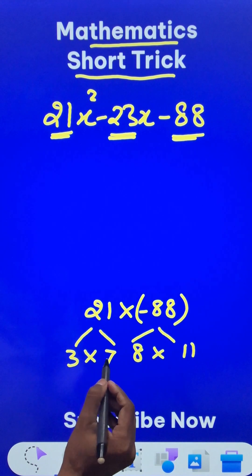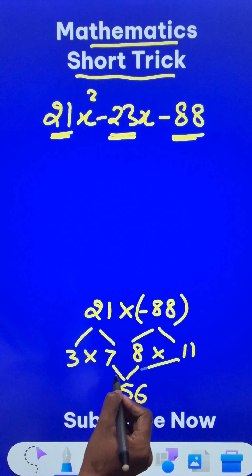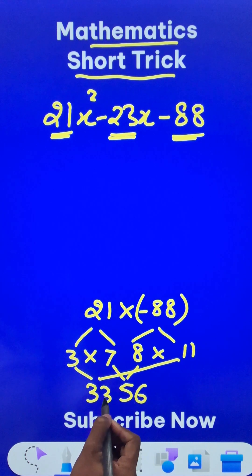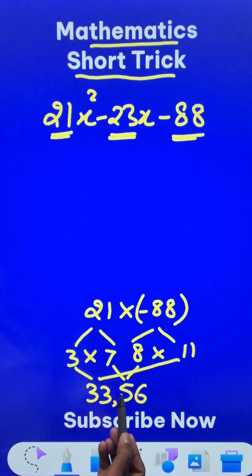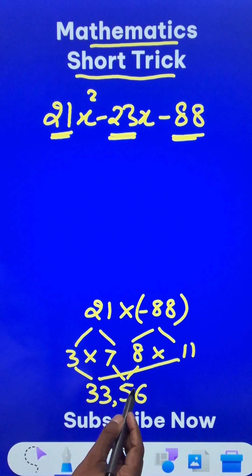Now if you see, we have 7 times 8 is 56 and 11 times 3 is 33. Now can you see a relationship between 56 and 33? It can give us 23, right, when you subtract them.